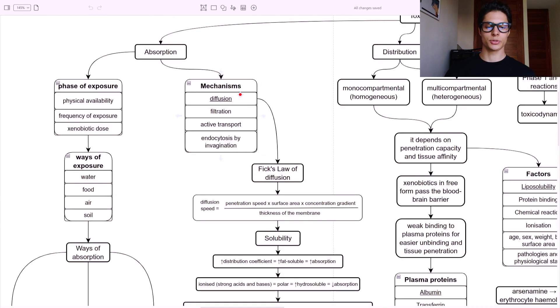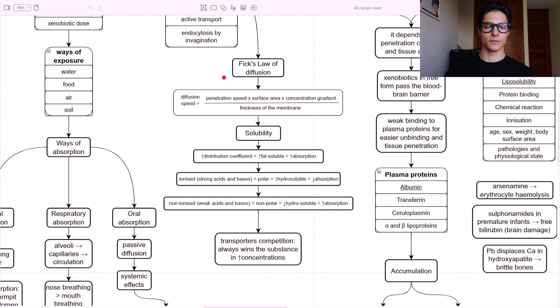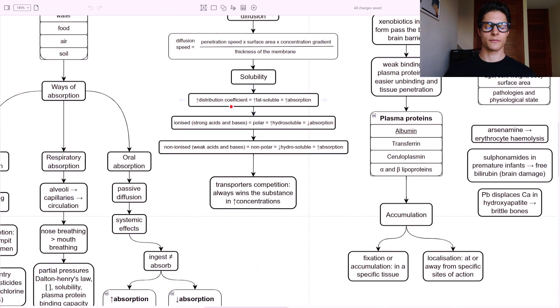What are the mechanisms of absorption? Diffusion mainly, filtration, active transportation, and endocytosis by invagination. Diffusion is the main one - Fick's law of diffusion. The diffusion speed equals the penetration speed multiplied by the surface area, the concentration gradient divided by the thickness of the membrane. The thicker the membrane is, the lower is the diffusion speed. Solubility - so a higher distribution coefficient means that there is high fat solubility, and high fat solubility equals higher absorption. So if something is fat soluble, it's very highly absorbable.